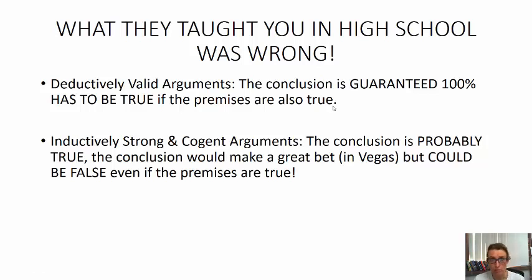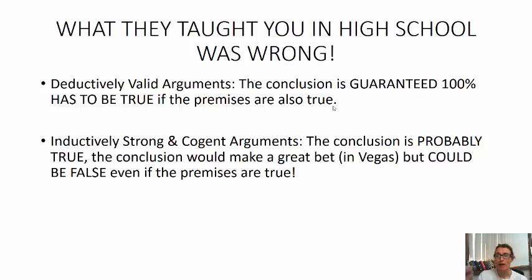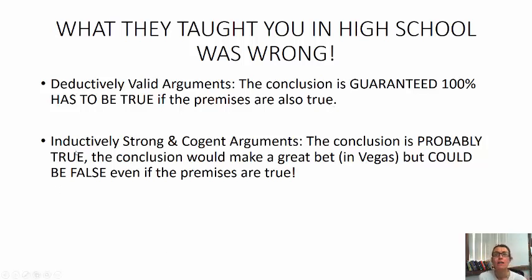Just like the Pythagorean theorem — if you plug in the right variables to your geometry theorem, use the right formula, and do the math correctly, it is impossible to get the wrong answer. Same with deductive logic: if you have the right structure and formula and plug in true premises, the conclusion is one hundred percent guaranteed and cannot be false.